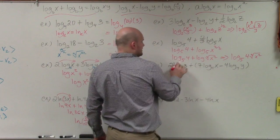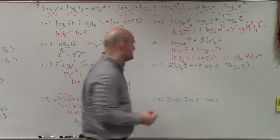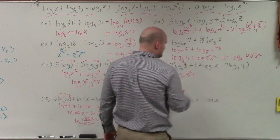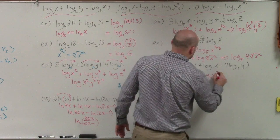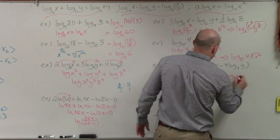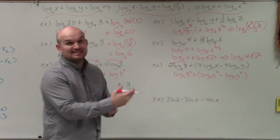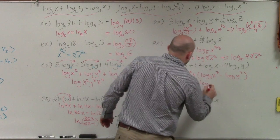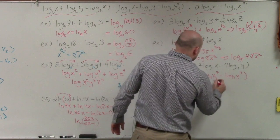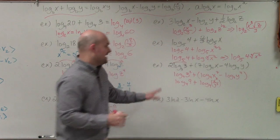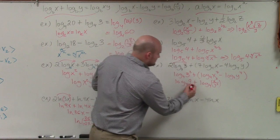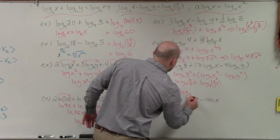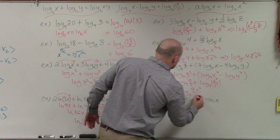So I'll rewrite: 3 squared is 9. That gives me log base 4 of x to the 7th minus log base 4 of y to the 4th. Now we divide those, giving log base 4 of 9 plus log base 4 of x to the 7th over y to the 4th. Multiplying these together — 9 is over 1, so it's 9 times x to the 7th and 1 times y to the 4th — my final answer is log base 4 of 9x to the 7th divided by y to the 4th.